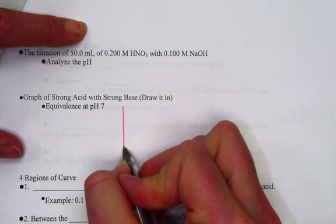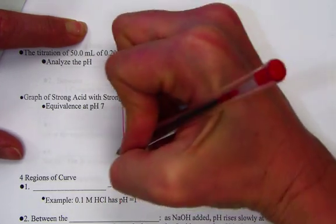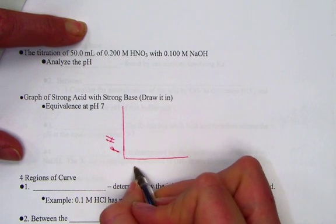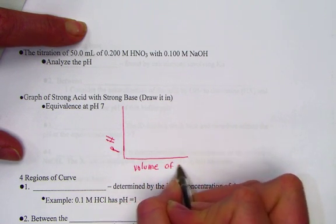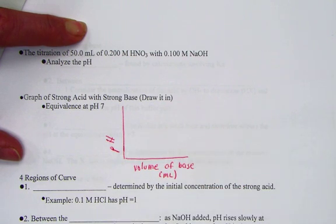So what I'll end up doing is drawing a little graph where we'll place pH units on the y-axis, and the volume of base that is being added in our titration on the x-axis, and we'll measure that volume in milliliters.